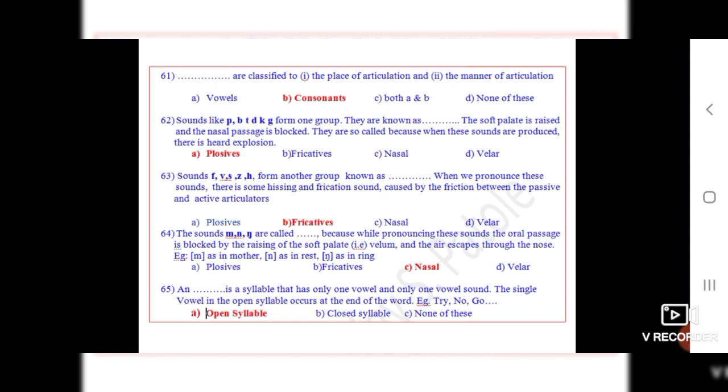Question 64: The sounds M, N, NG are called dot dot. Because while pronouncing these sounds, the oral passage is blocked by the raising of the soft palate, i.e., velum, and the air escapes through the nose. For example, M as in mother, N as in nice, NG as in ring. The correct option is C, nasals.